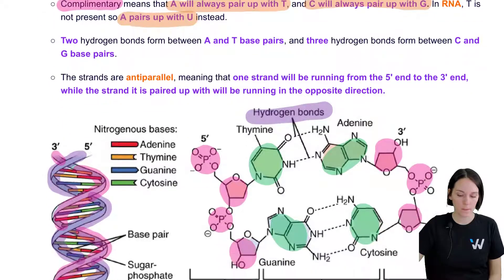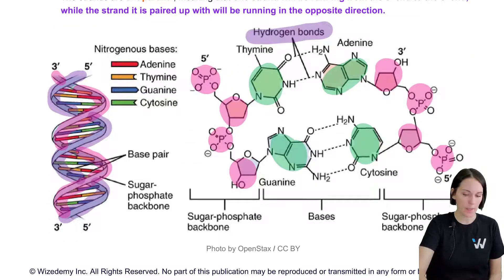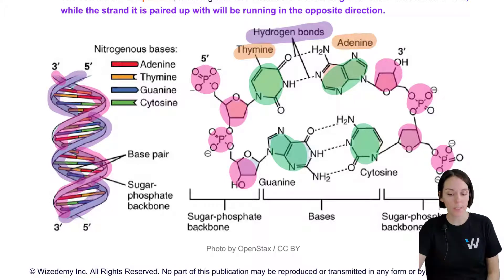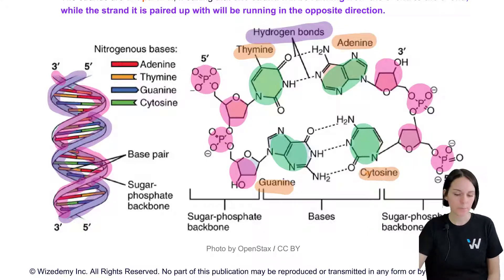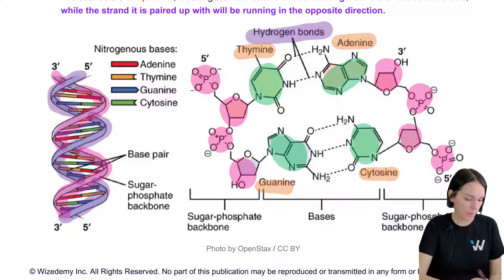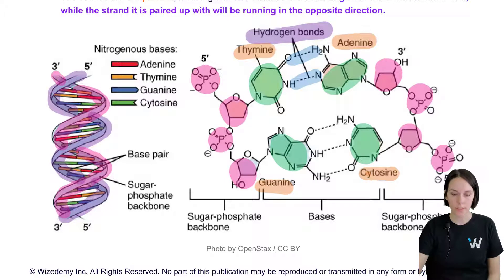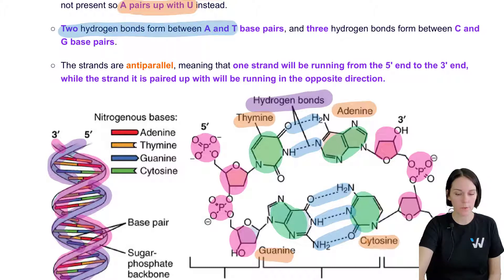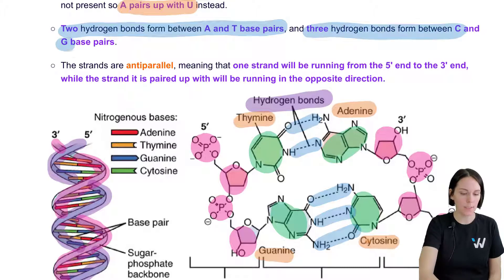Looking at our diagram, we have a thymine and an adenine — right away we know we're looking at DNA. We also have a guanine and a cytosine. Between A and T, two hydrogen bonds form, whereas between C and G, three hydrogen bonds form. So two hydrogen bonds form between A and T (as well as between A and U), and three hydrogen bonds form between C and G.